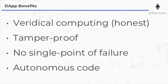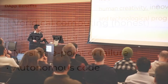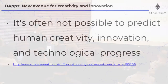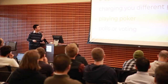The other benefits are: it's tamper-proof, there's no single point of failure, and there's autonomous code. If you're trying to figure out the values of decentralized applications, I point to the example of the internet — it's often not possible to predict human creativity, innovation, and technological progress.